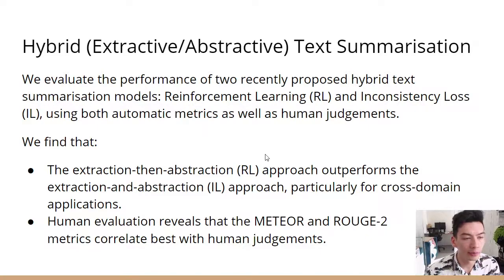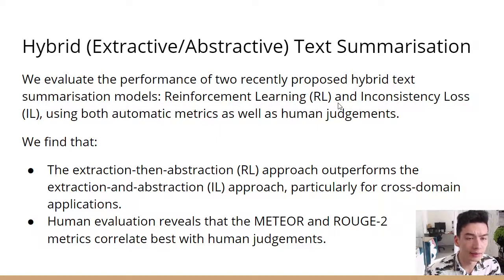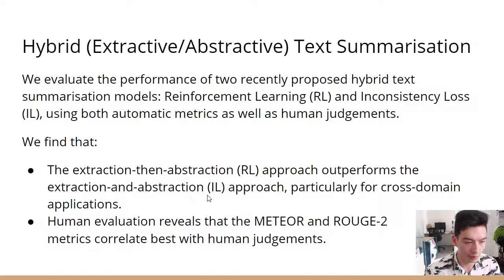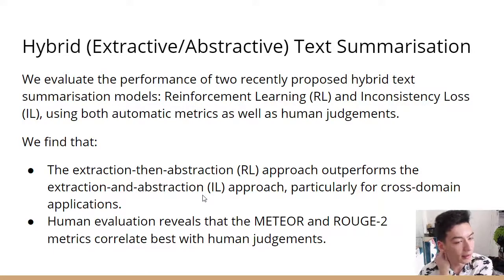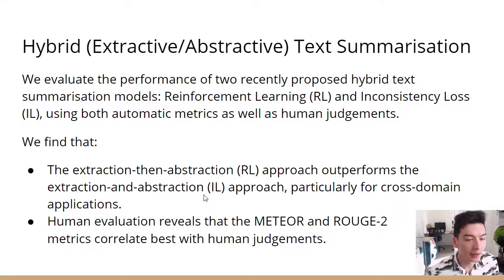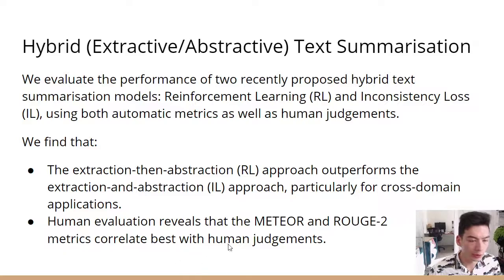In this paper we evaluate the performance of two recently proposed hybrid text summarization models: reinforcement learning and inconsistency loss. We use both automatic metrics as well as human judgments. In conclusion, we find that the extraction-then-abstraction approach, which is the reinforcement learning approach, outperforms the extraction-and-abstraction approach, which is the inconsistency loss approach, particularly for cross-domain applications. We also do human evaluations, and they reveal that Meteor and Rouge-2, which is a bigram — a two-word match — correlate the best with human judgments. But ultimately, these are quite rudimentary metrics.